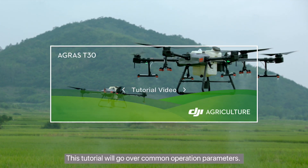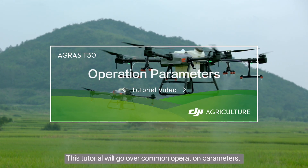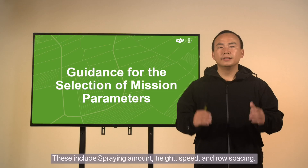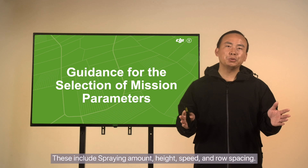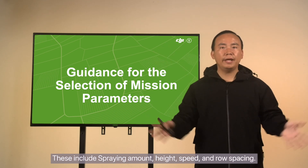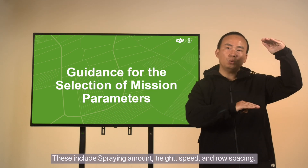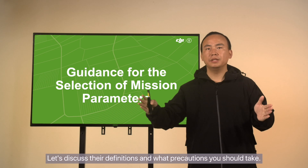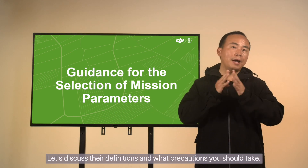This tutorial will go over common operation parameters. These include spraying amount, height speed, and row spacing. Let's discuss their definitions and what precautions you should take.